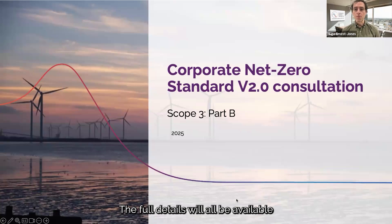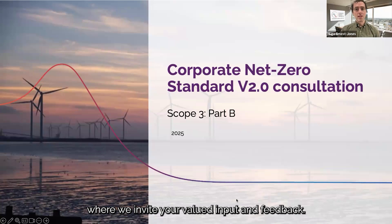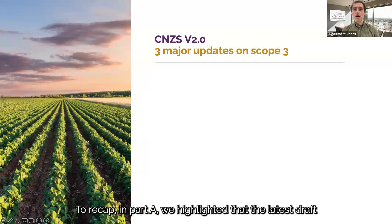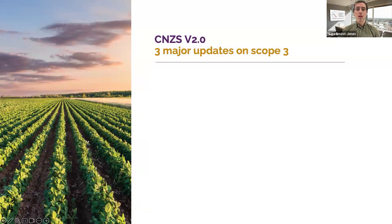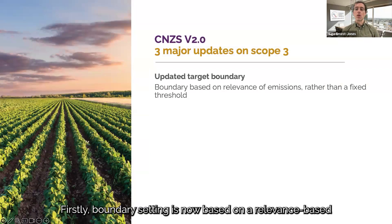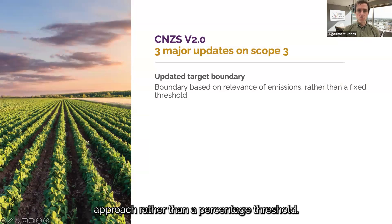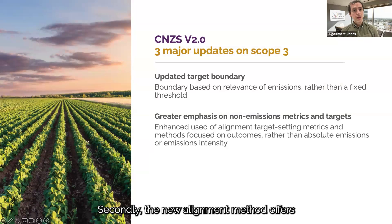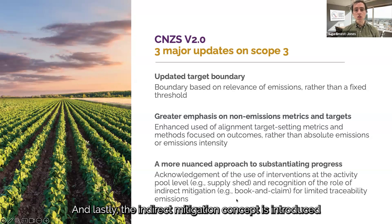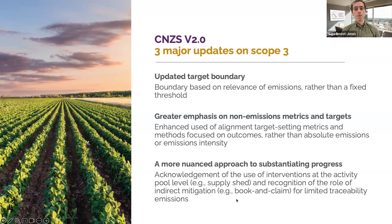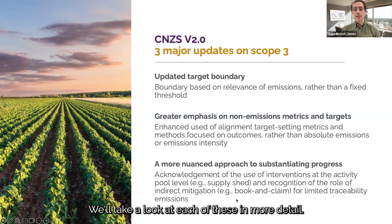The full details will all be available as part of the public consultation where we invite your valued input and feedback. To recap, in part A we highlighted that the latest draft standard includes three main updates on Scope 3. Firstly, boundary setting is now based on a relevance-based approach rather than a percentage threshold. Secondly, the new alignment method offers companies more flexibility in how they set targets. And lastly, the indirect mitigation concept is introduced for cases where direct mitigation is not feasible. We'll take a look at each of these in more detail.